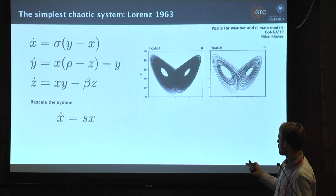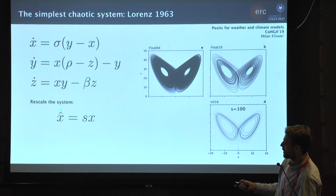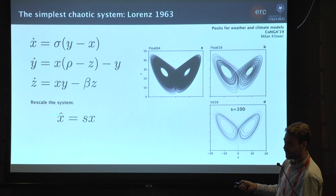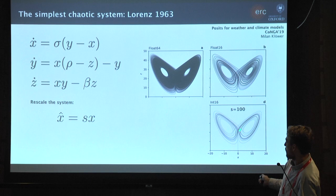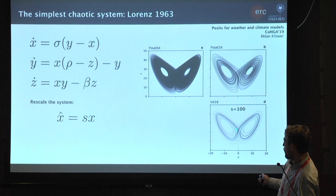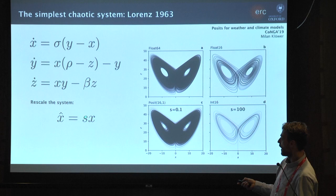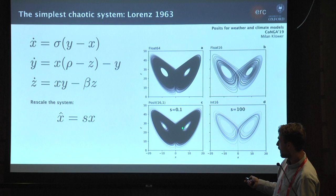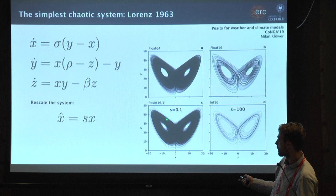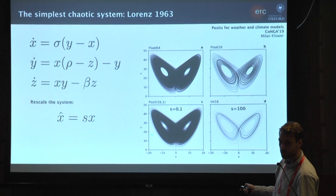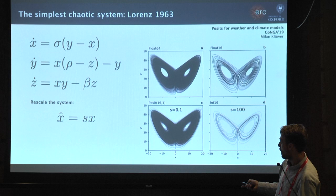We can actually treat this a little bit by rescaling the system - just ramping up the numbers a bit. If we use a scaling on the order of 100, we can compute the system within 16-bit integers, but it's even worse - funny things happen where numbers get rounded to zero and you converge to the origin. However, if we use posits, I was really surprised - with a little bit of scaling, this is much closer to the double precision result. This is basically because there's so much more precision around the orders of magnitude of the numbers computed here.